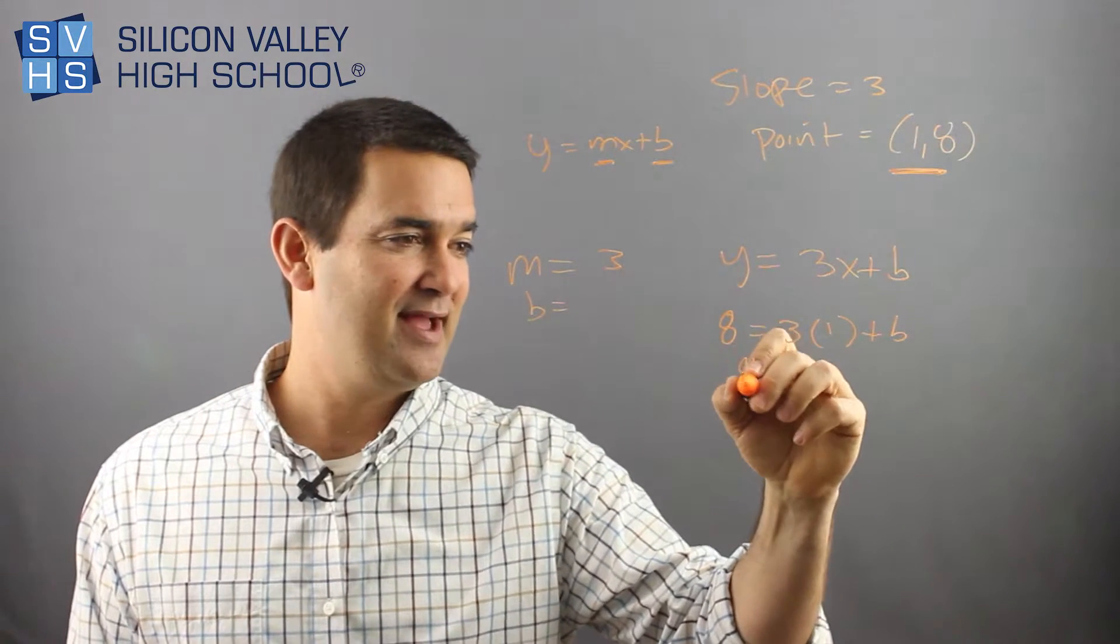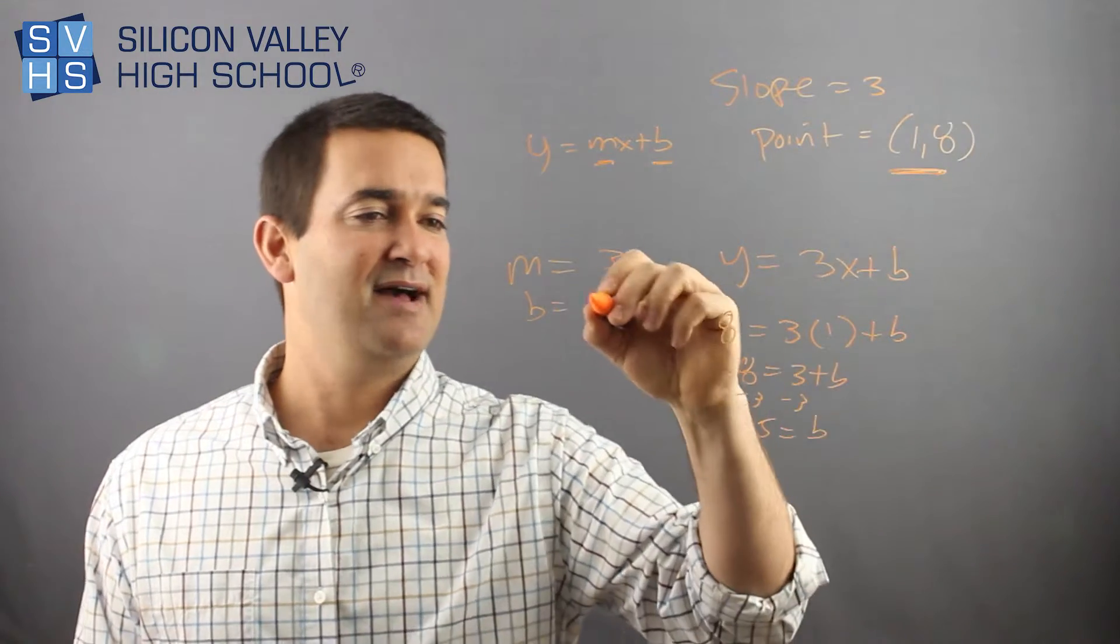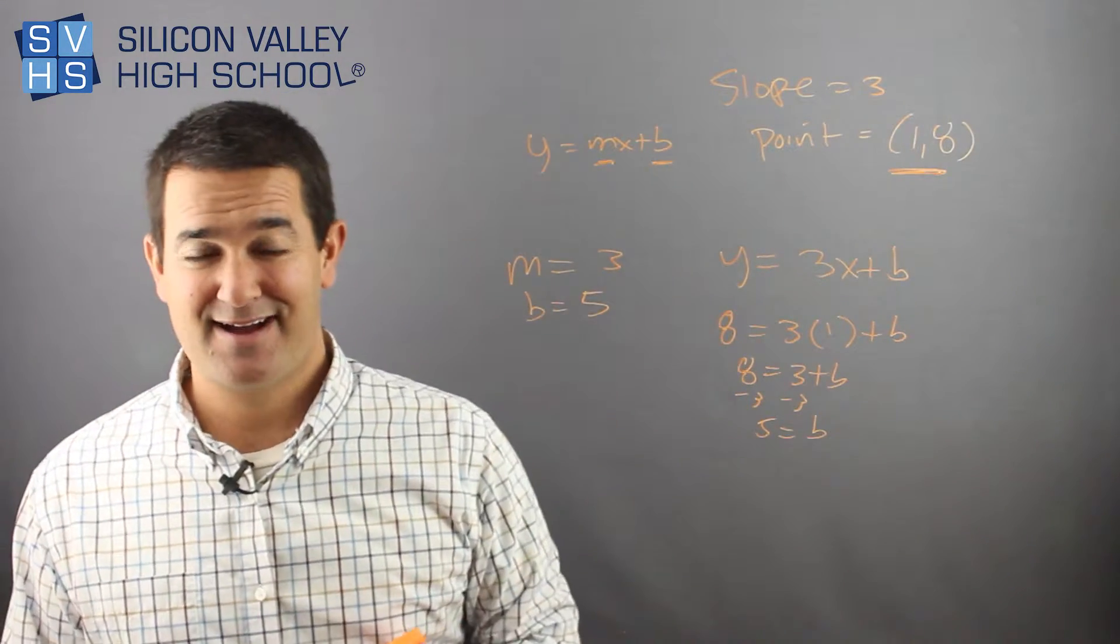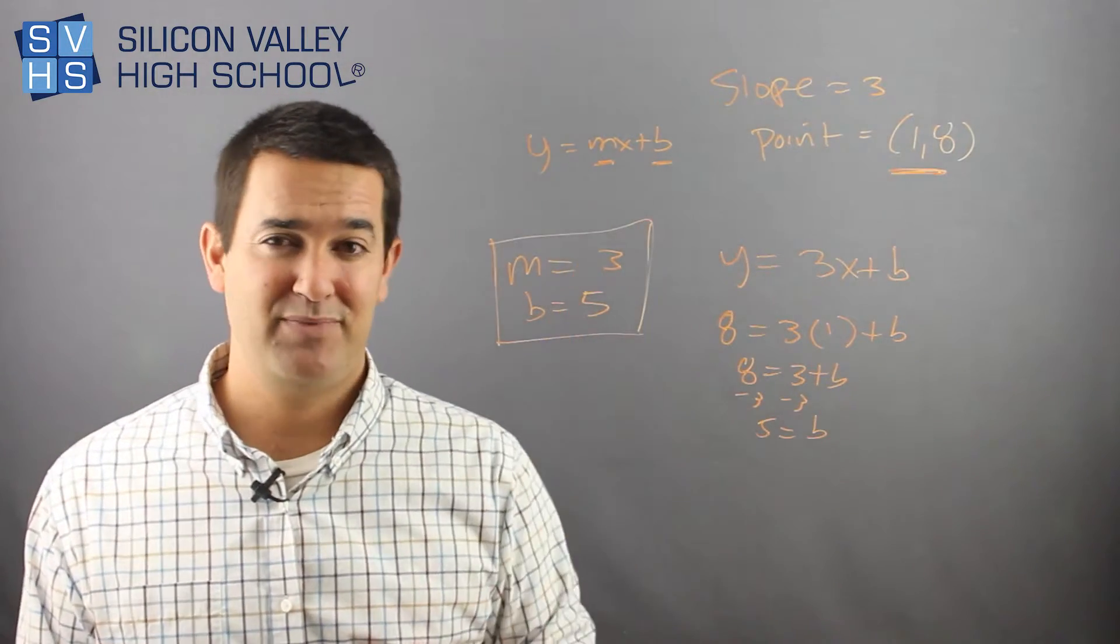Now we're just solving. So now we have eight equals three plus b. So minus three, minus three. Looks like b is five. I put it in my little tally area and now I know, according to Ryan, I am totally done. I found my m and my b.